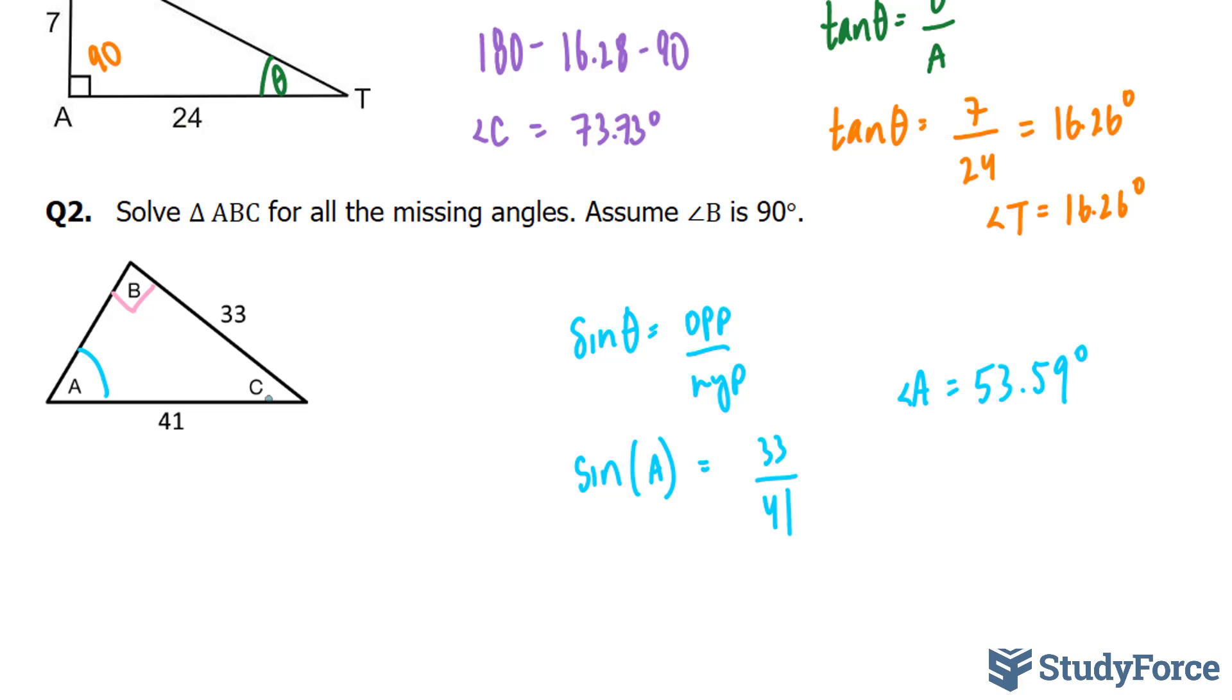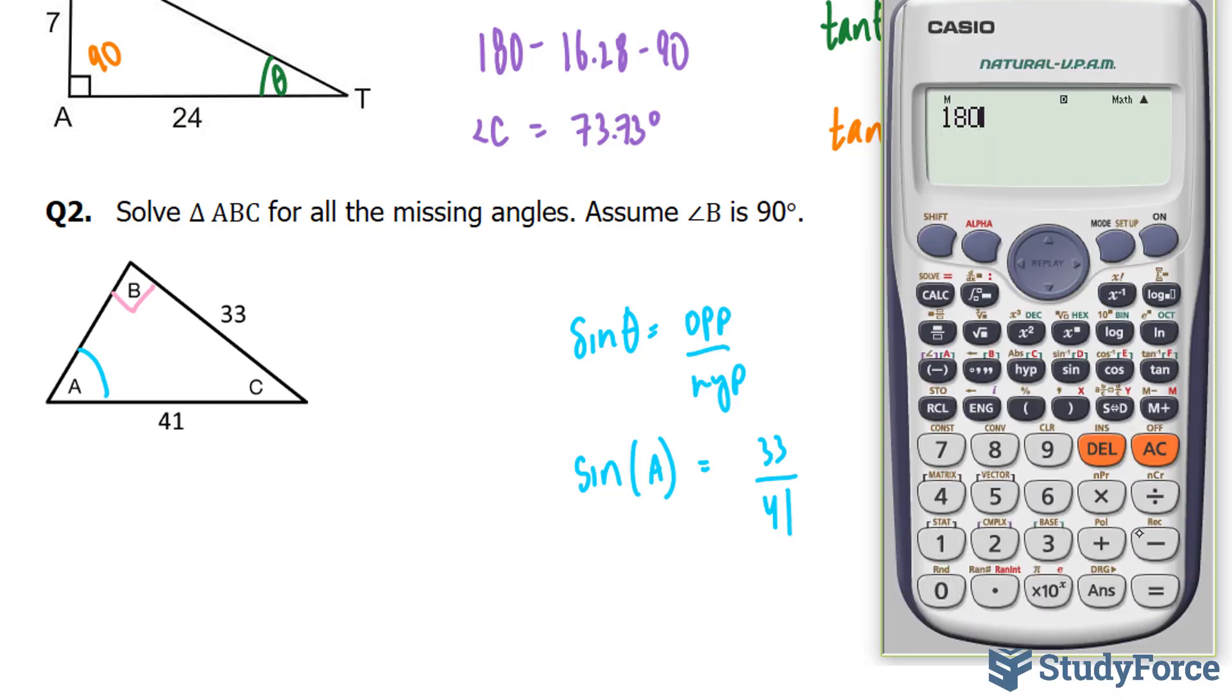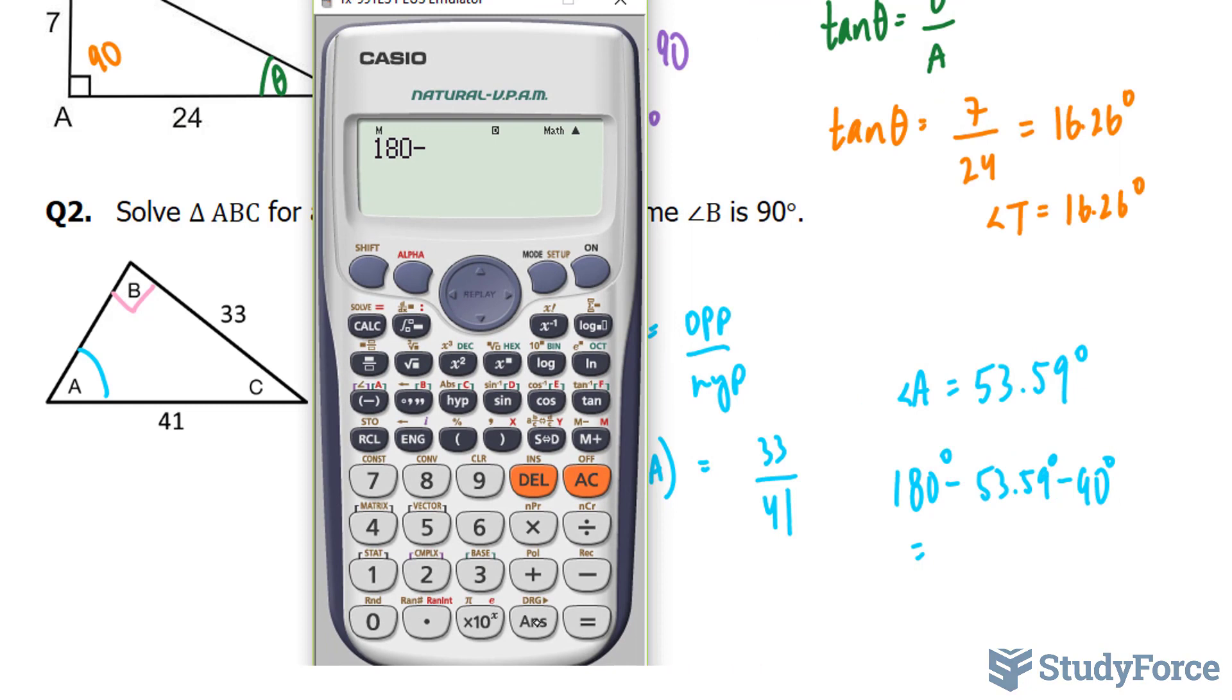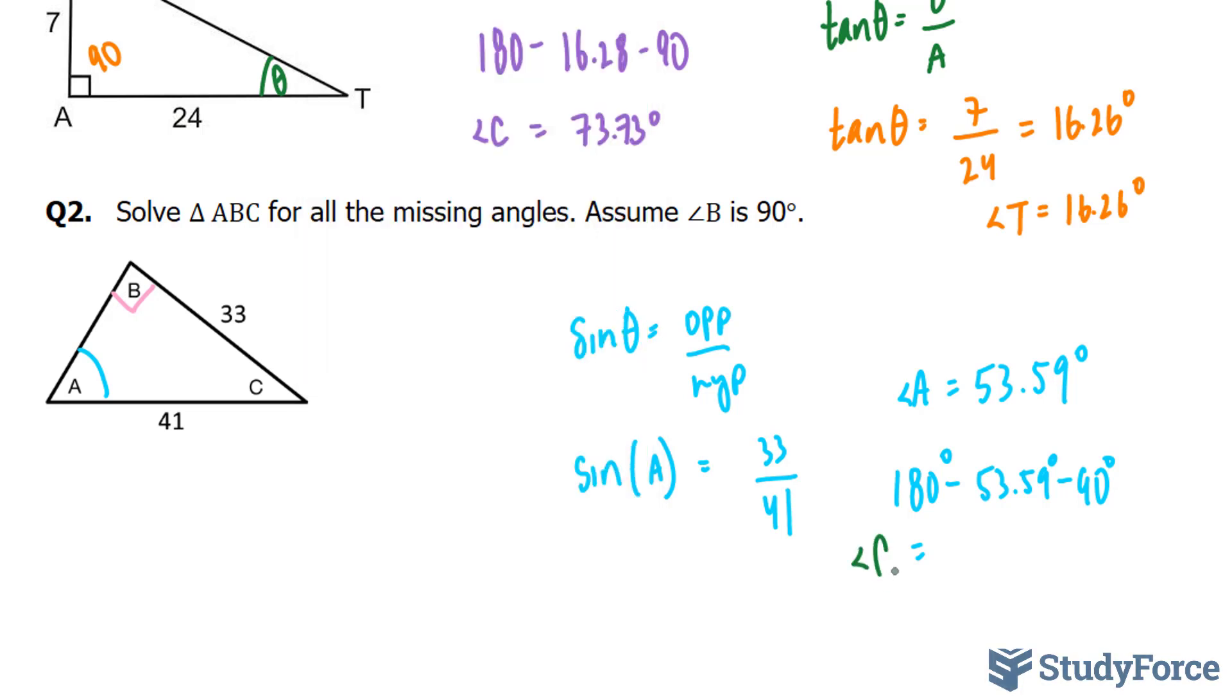Now, we also need to find angle C. Now, if you recall from the previous example, you will subtract 180 minus 53.59 minus 90. And this will give us, using our calculator, 180 minus the answer we just got, minus 90 gives us angle C to be 36.4 degrees. So angle C is equal to 36.4 degrees. And that's it. We just found all the missing angles to this right triangle.